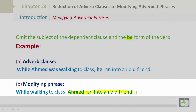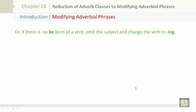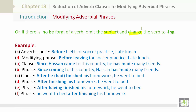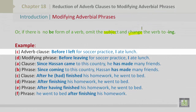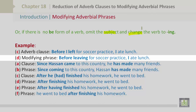If there is no BE form of a verb, you omit the subject and change the verb to -ing. For example, the adverb clause: 'Before I left for soccer practice, I ate lunch.' Omitting the subject gives us: 'Before leaving for soccer practice, I ate lunch.'